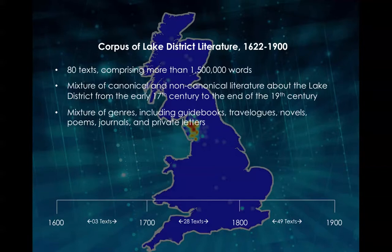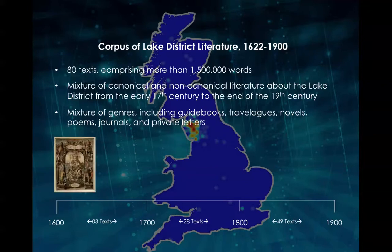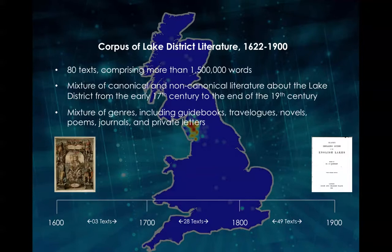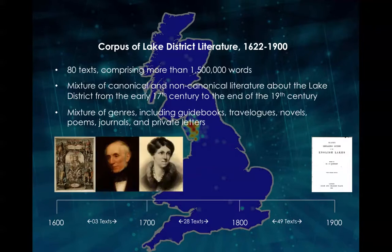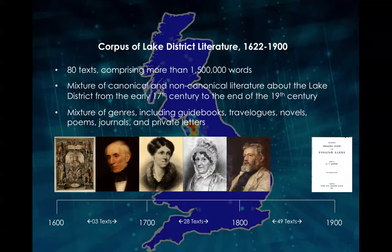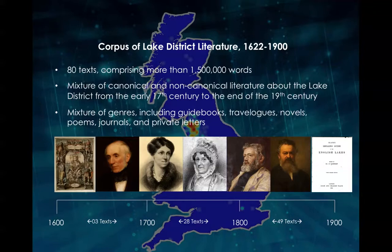To date, our corpus consists of 80 digitized texts comprising well over a million and a half words, spanning from the 1622 edition of Michael Drayton's Polyolbion to the 22nd edition of Black's Shilling Guide to the English Lakes, published in 1900. The full list includes well-known works such as the guidebooks of Lakeland luminaries like Wordsworth and Harriet Martineau, but it also features the works of dozens of lesser-known writers, including Priscilla Wakefield, W. G. Collingwood, and the Lancashire dialect poet Edwin Waugh. This mixture of sources is significant because working with large corpora of historical books allows us to generate more historically nuanced interpretations. By situating canonical texts such as Wordsworth's Guide alongside popular tourist publications such as Black's Shilling Guide, we can perform far more comprehensive analyses of how the Lake District was perceived, experienced, and represented in the past.